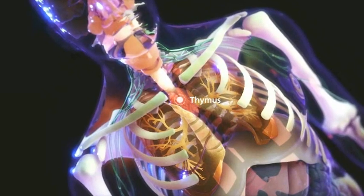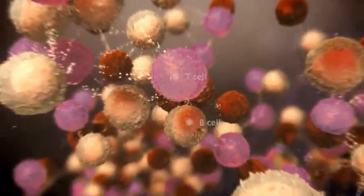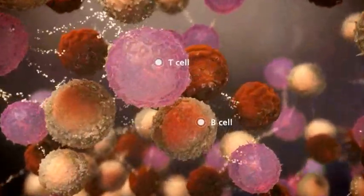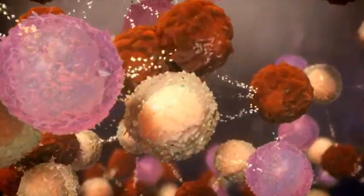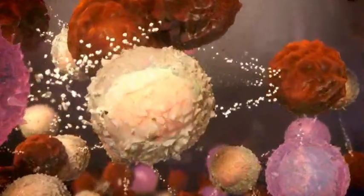The thymus gland is part of the acquired immune system, in which B and T cells learn to recognize and remember foreign substances called antigens so they can be attacked more efficiently in future encounters.